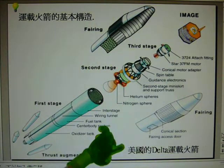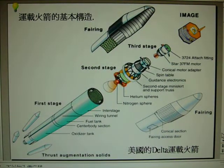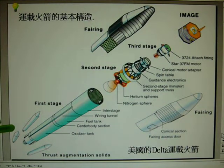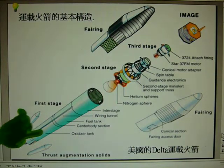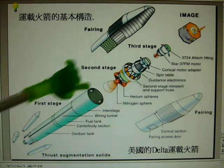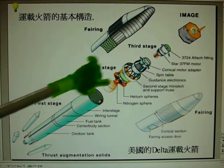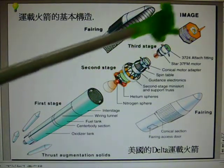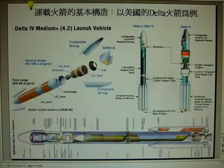We will use the American Delta rocket as an example to introduce the structure of launch vehicles. It contains a solid rocket booster, liquid rocket engine, liquid rocket fuel tank, acidity tank, second stage rocket engine, third stage rocket engine, and satellite payload.